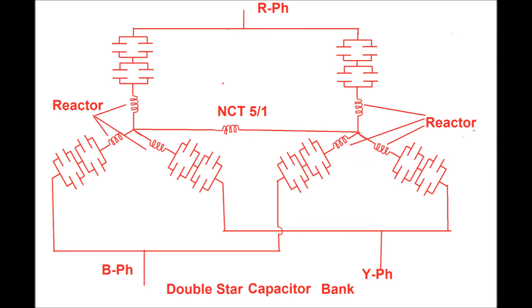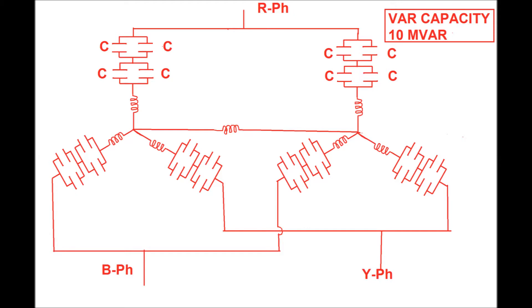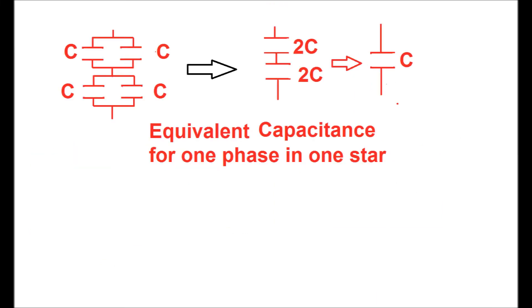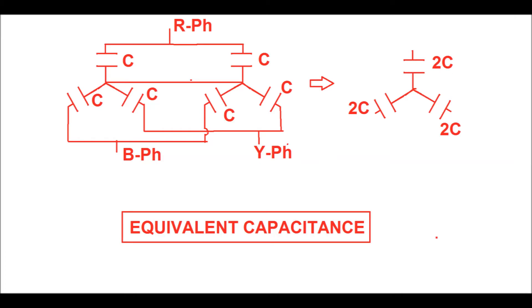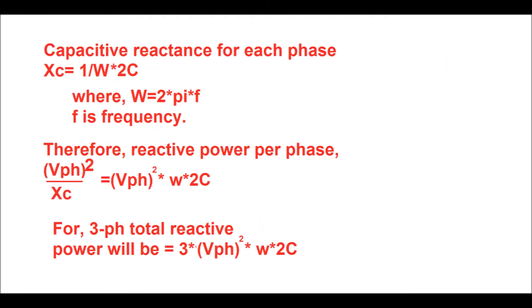Now we will calculate the capacitance unit value for a 10 MVAR capacitor bank. First, we convert the parallel combination capacitor units to a single unit. If C is the capacitance of each unit, then for each parallel combination the value becomes 2C. The 2C and 2C in series gives C. Therefore, the equivalent capacitance for one phase for one star is C. The equivalent capacitance for each phase for the double star is 2C.